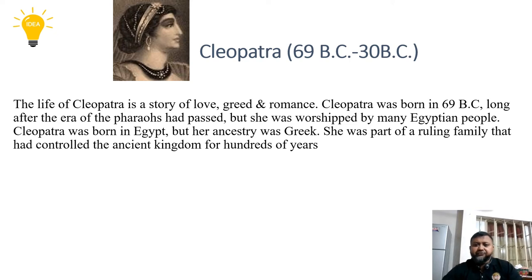According to history, the life of Cleopatra is the story of love, greed, and romance. Cleopatra was born in 69 BC, long after the era of the pharaohs had passed. But she was worshipped by many Egyptian people. Cleopatra was born in Egypt, but her ancestry came from Greece. Cleopatra's father was Ptolemy, who was a Macedonian general. By ancestry, Cleopatra belongs to Macedonia, but she was born in Egypt and lived her life there. She was a part of the ruling family that had controlled the ancient kingdom of Egypt for hundreds of years.